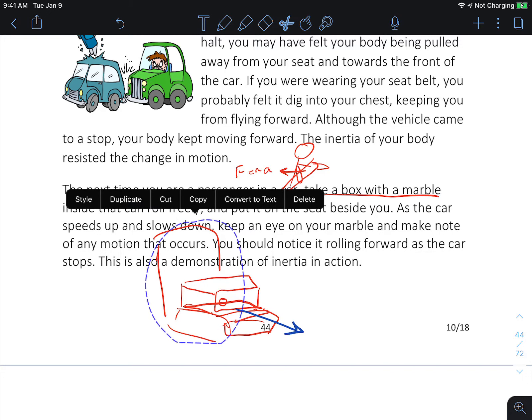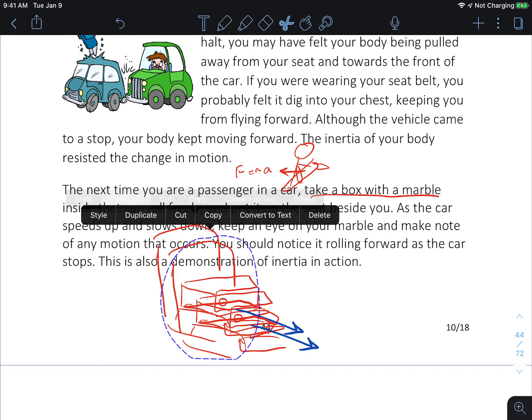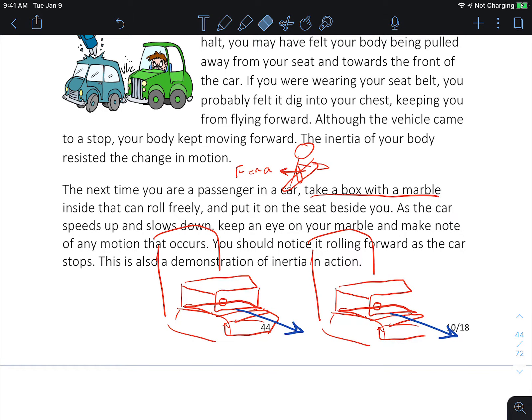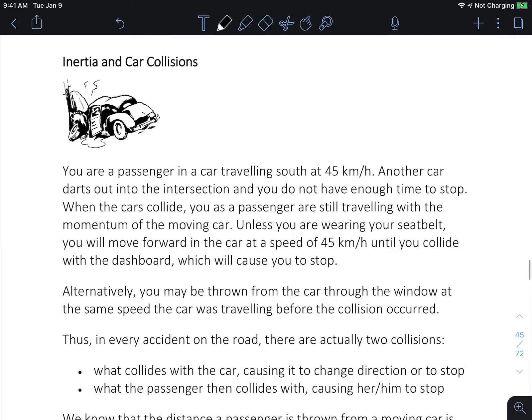If we take the same image and we draw it stopping, then when the car stops, the car has a negative acceleration. So this is stopping and this is accelerating. The marble will move forward to the front of the box because the box is stopping but the marble is not.